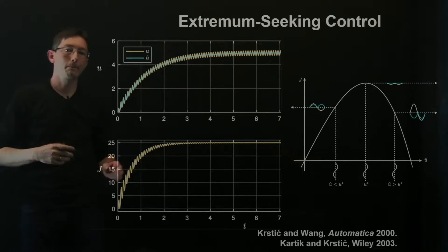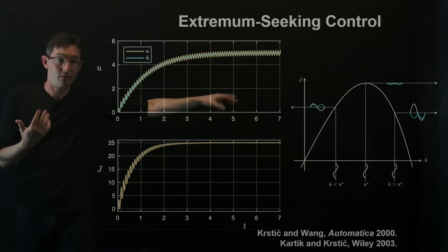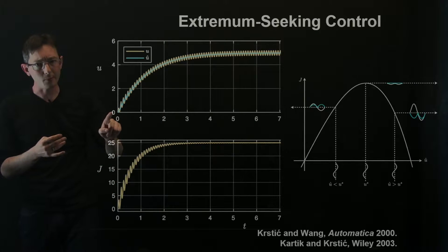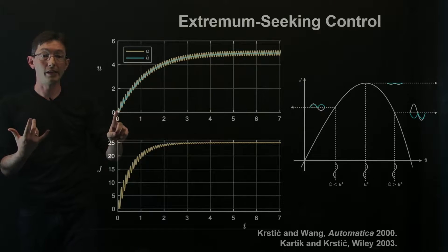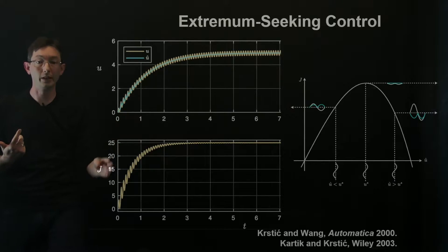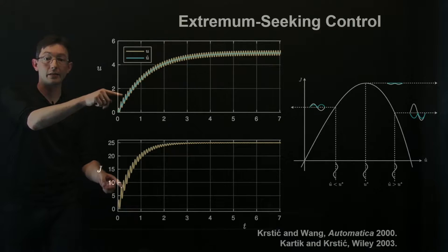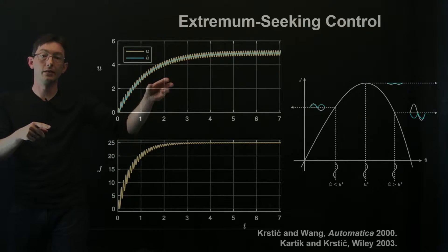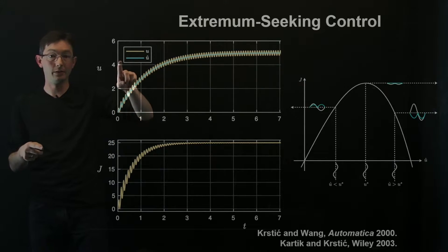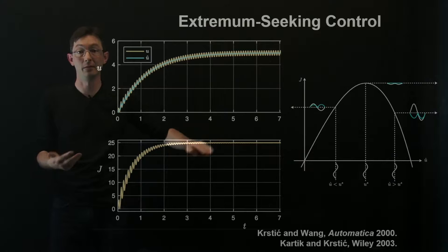And what this looks like, this is for a simulated example that we're going to cook up in a minute. I have this basic quadratic landscape here, and I run my extremum seeking control starting from the left of the optimum. You see that very rapidly there's a sinusoidal perturbation on top of my best control estimate u hat, and that sinusoidal input gives rise to a sinusoidal output in the objective function. Over time because I started to the left, this jiggle walks me to the right in u, from zero to five, and five appears to be the optimizing control input which gives me the maximum of j.